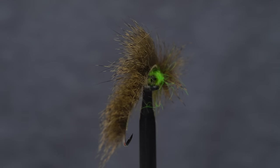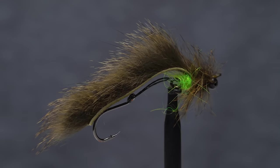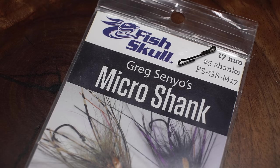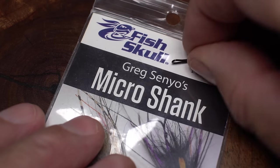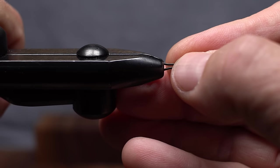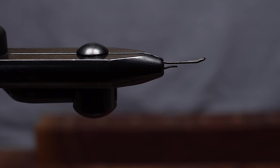I've only been tying and fishing it for a couple of months, but so far I'm happy with its performance. The foundation of the fly is a 17mm micro shank. It's an intruder style shank with a vertically oriented rear eye. Begin by getting that rear eye firmly secured in the jaws of your tying vise. A rotary vise works well for this pattern, but isn't mandatory.